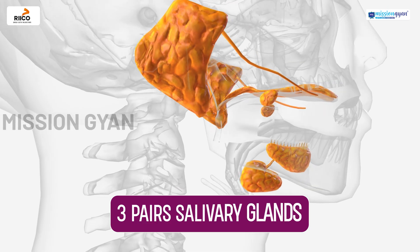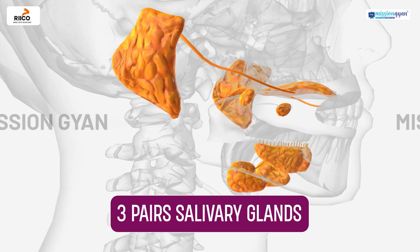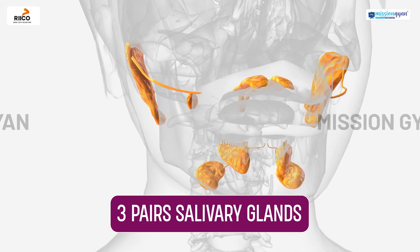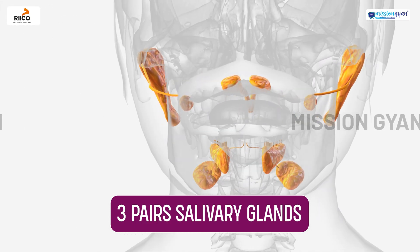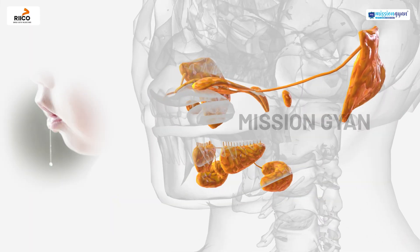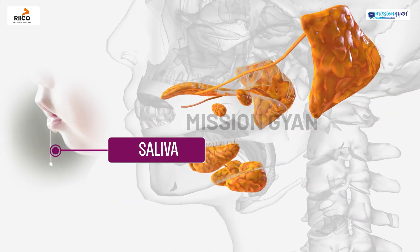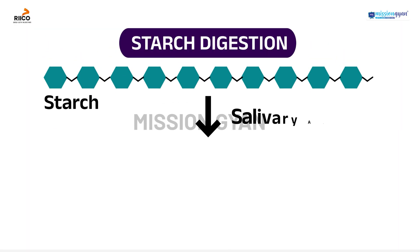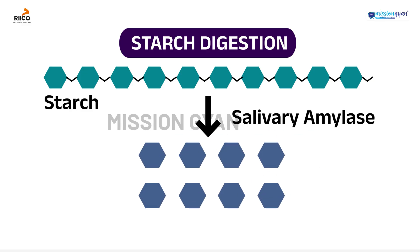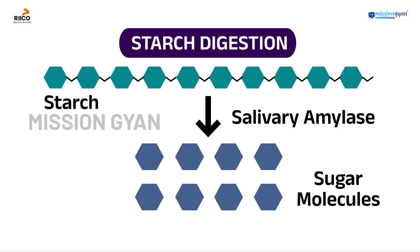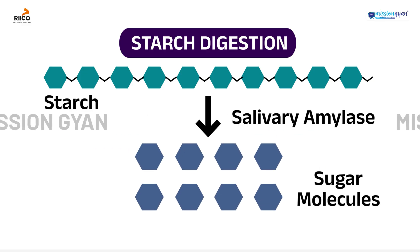Three pairs of salivary glands present in the mouth and throat secrete a watery fluid called saliva. It contains an enzyme called salivary amylase which breaks down starch into simple sugars in the mouth.